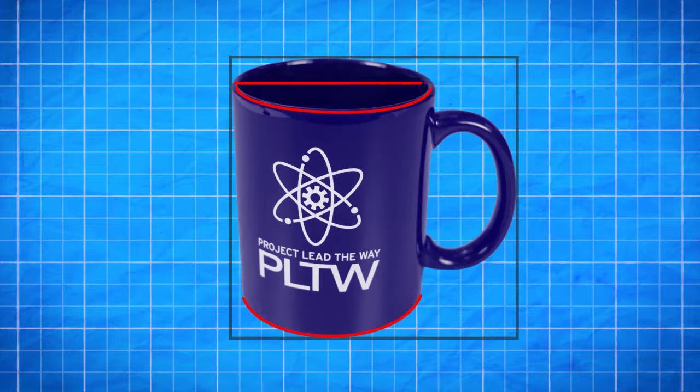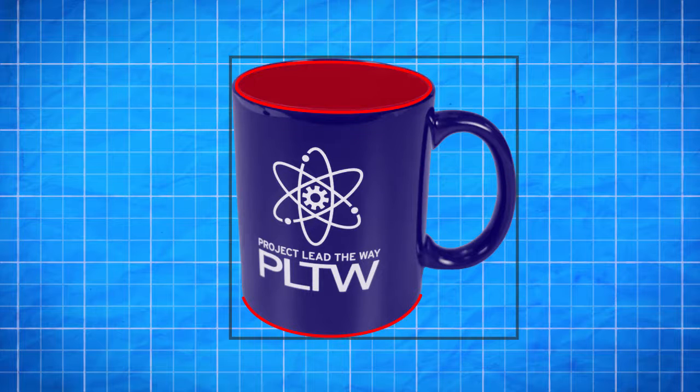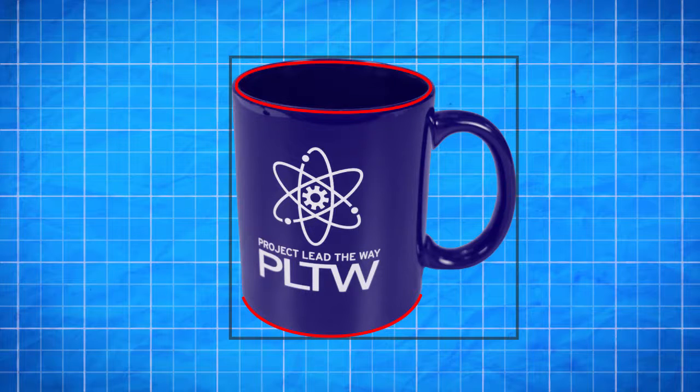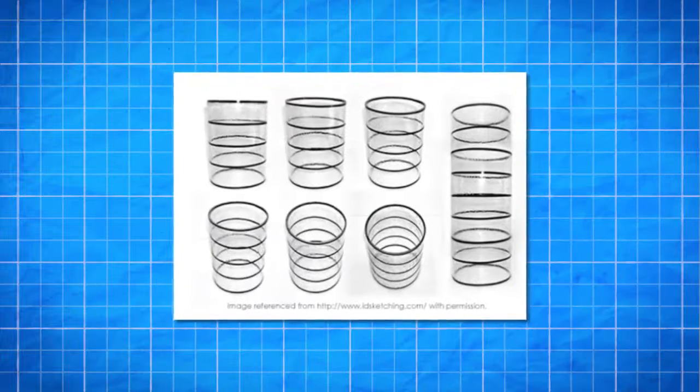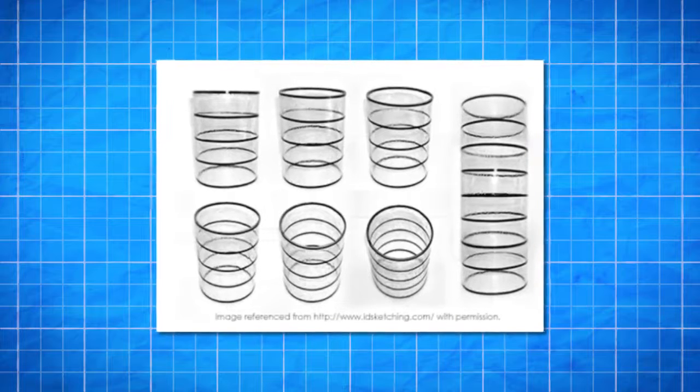Hint, the curved edge of an object changes depending on how you're looking at it. The farther away the edge is from your eye level, the more rounded it becomes. This can be seen by viewing a glass with circles drawn along the outside surface at different angles.